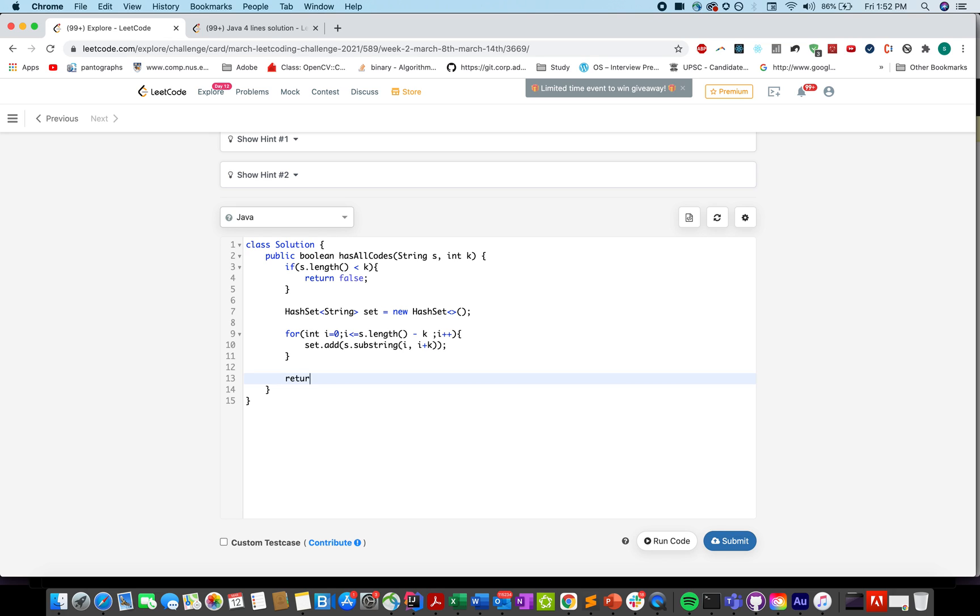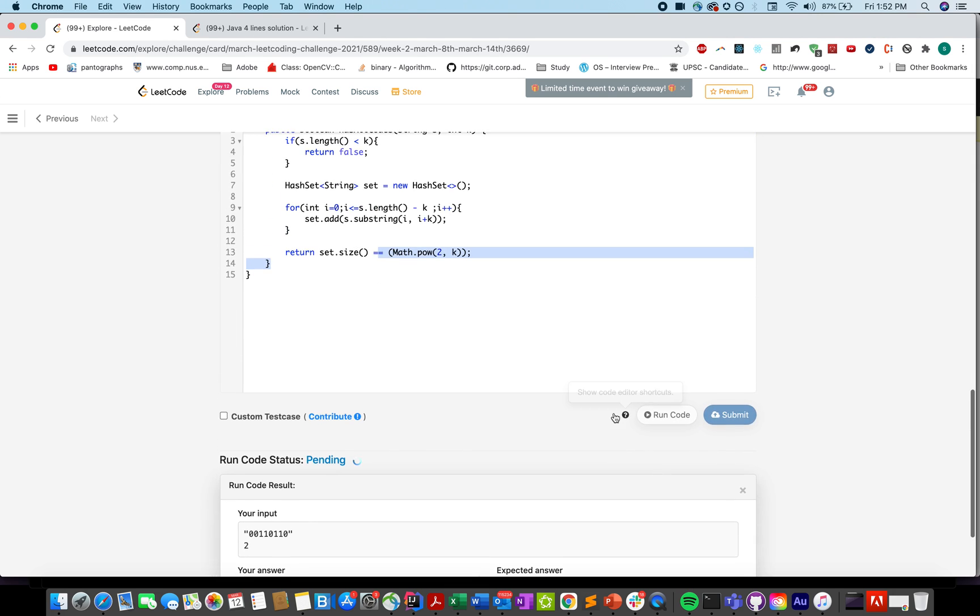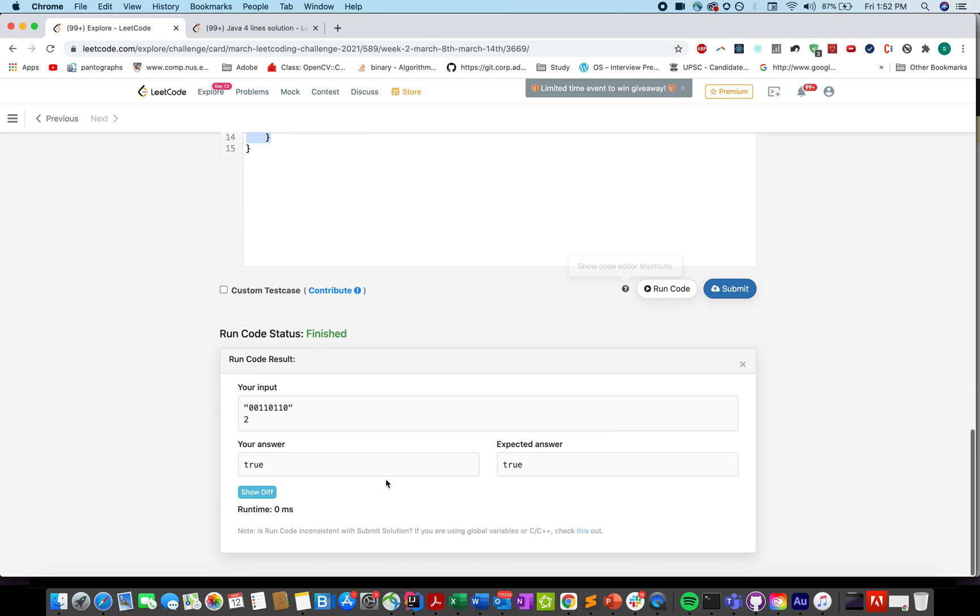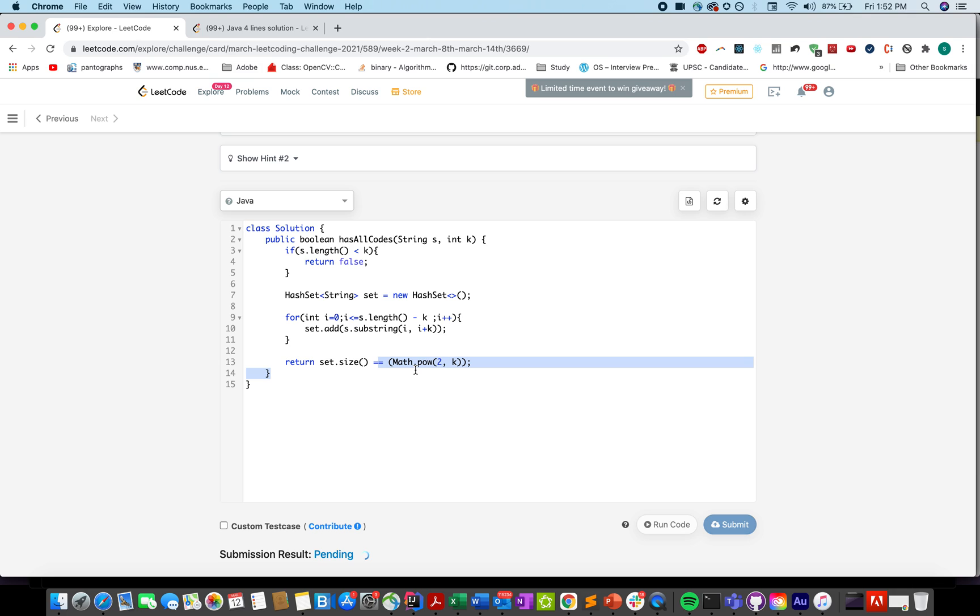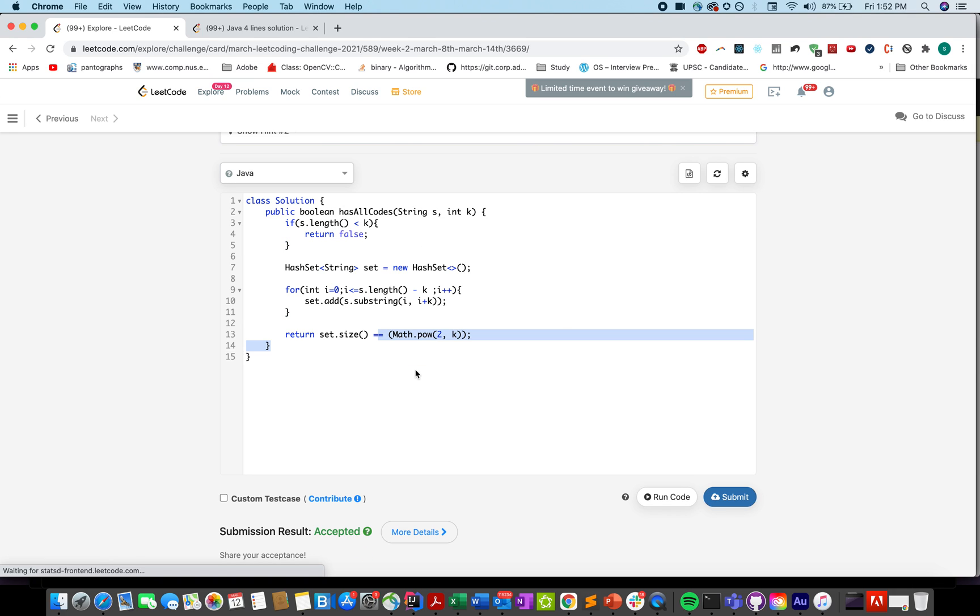And once we have all of them added in the set, let's compare the size, the expected size and the current size. So this is the current size. What is expected size? That would be math.pow 2 comma k. And I think we are good here. Let's just try and run the code. Return true. And let me just submit it. Accepted.